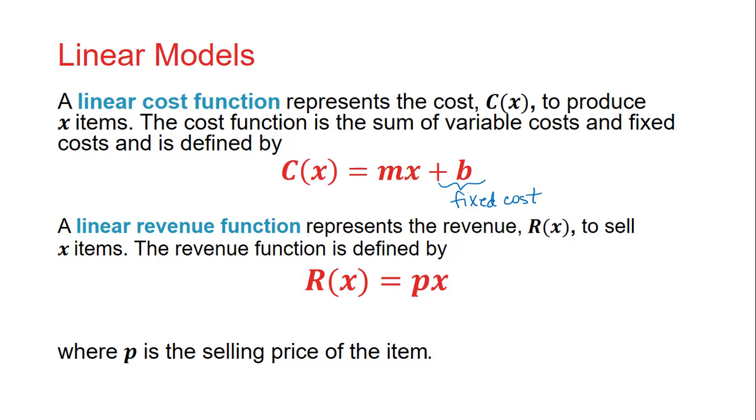And then the variable cost is represented by mx. So m, the slope, represents the cost to produce each item. That's telling us how the cost is changing.